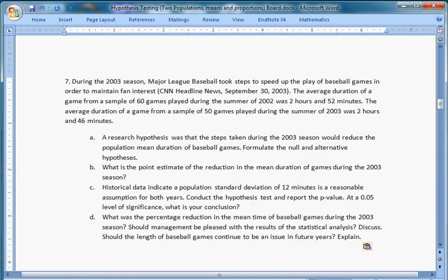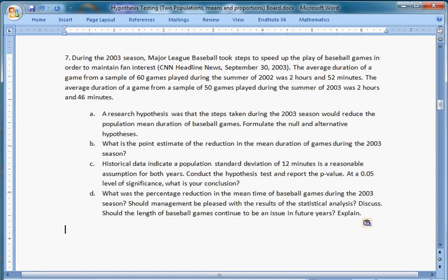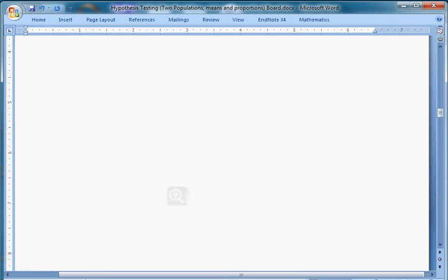During the 2003 season, Major League Baseball took steps to speed up the play of baseball games in order to maintain fan interest. The average duration of a game from a sample of 60 games played during the summer of 2002 was 2 hours and 52 minutes. The average duration from a sample of 50 games played during summer 2003 was 2 hours and 46 minutes. Part A: A research hypothesis was that the steps taken during the 2003 season would reduce the population mean duration of baseball games. Formulate the null and alternative hypotheses.